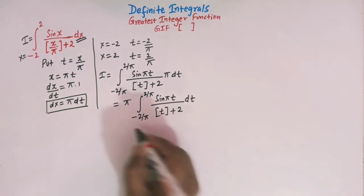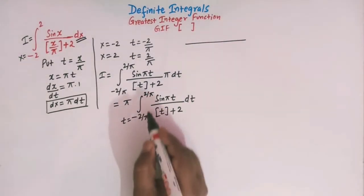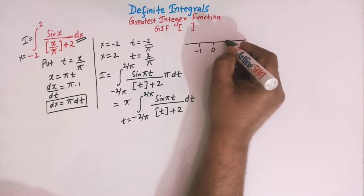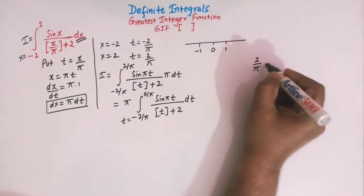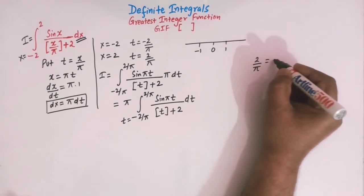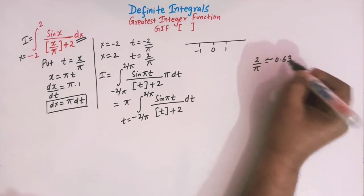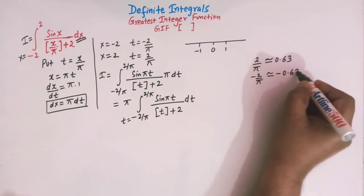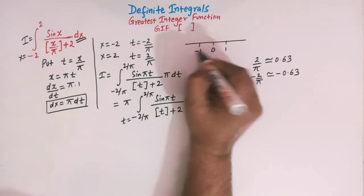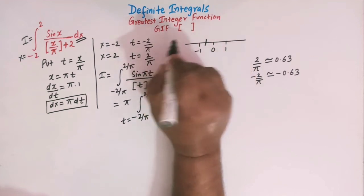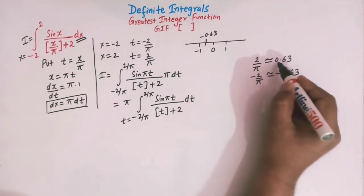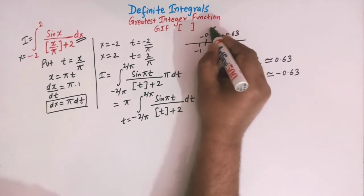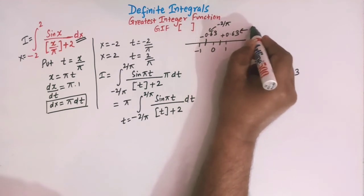Now t varies from minus 2/π to 2/π. Let us locate the integers: minus 1, 0, and 1. Calculating 2/π, we find it is approximately 0.63, so minus 2/π is approximately minus 0.63. Minus 0.63 lies between minus 1 and 0, and positive 0.63 also lies between 0 and 1.